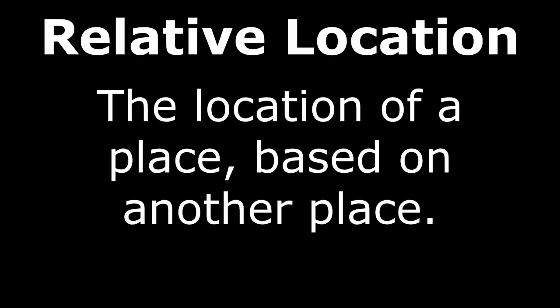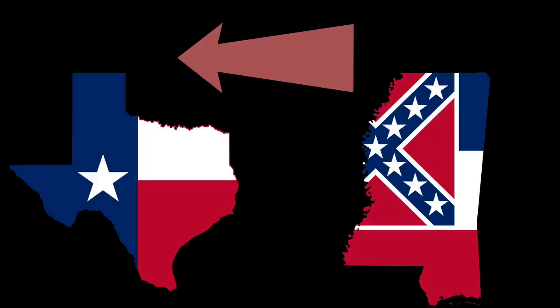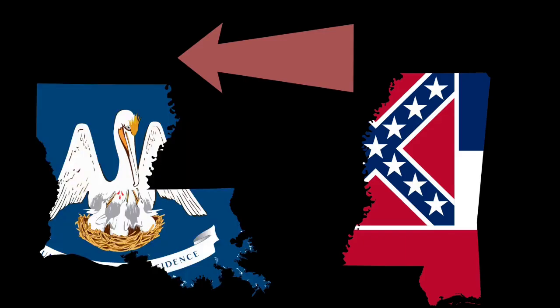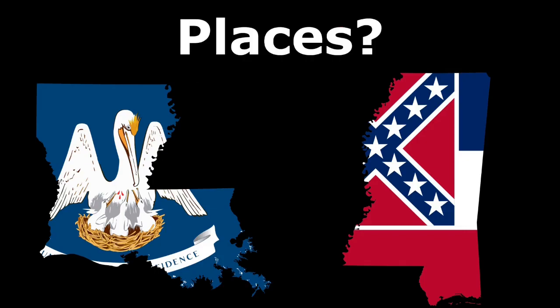Relative location is the location of a place based on another place. A good example is that Texas is west of Mississippi, and Louisiana is also west of Mississippi. These describe the relative locations of these places.